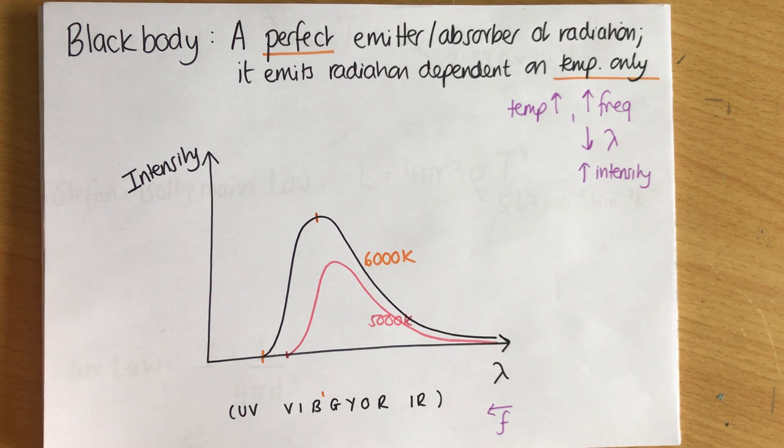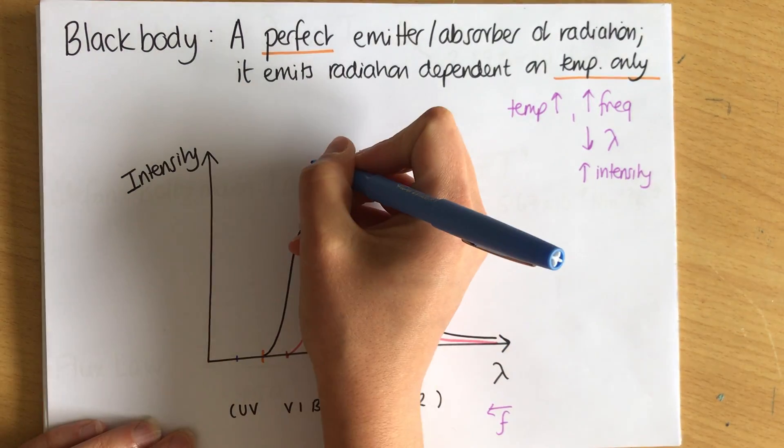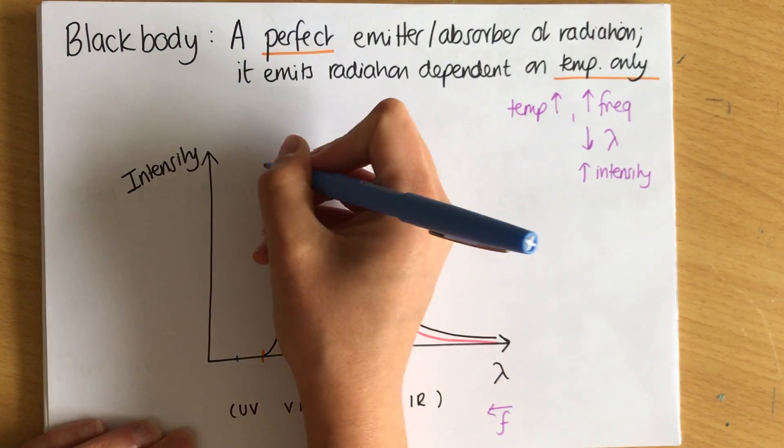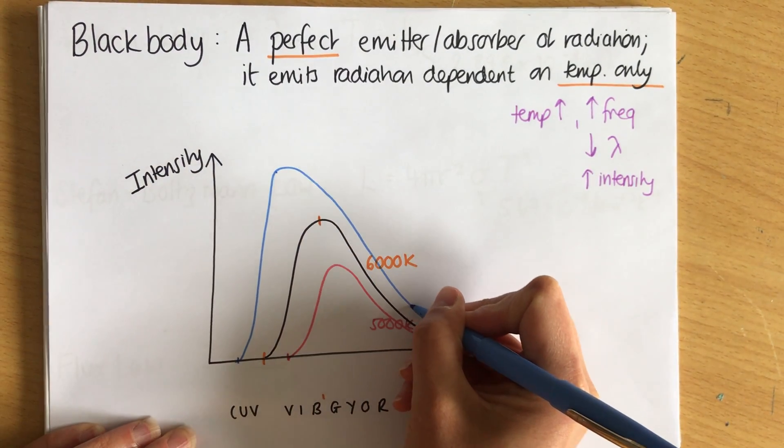A hotter star would follow the opposite pattern. So its starting frequency would be higher, its peak would be higher up and further over here, so the peak might be about there, and it would look something like so.